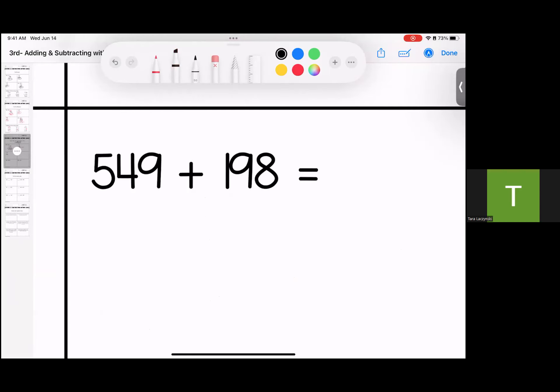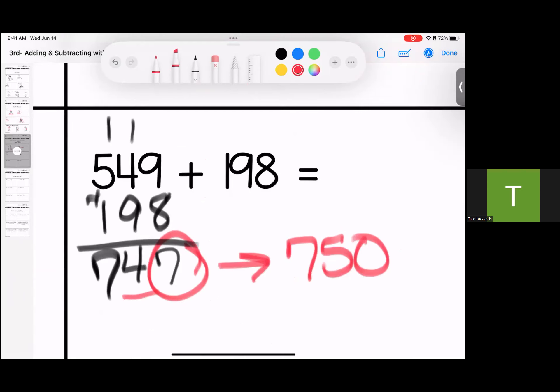Over here, I'm going to stack it. 8 and 9 is 17. 9 and 1 is 10, add 4 is 14. 5 and 1 is 6, add 1 is 7. 10 and rounded to the nearest 10 is 750.